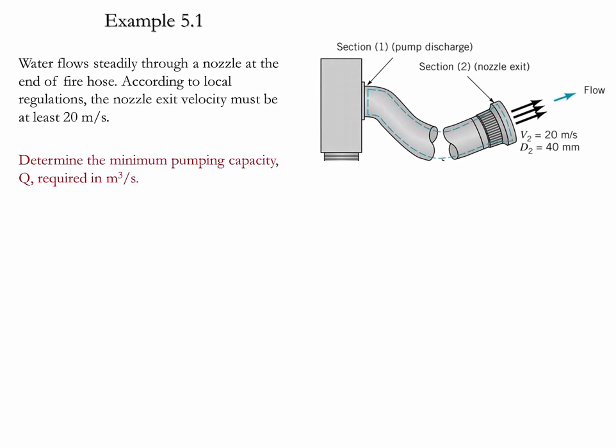Example 5.1. In this example, we have water flowing steadily through a nozzle at the end of a fire hose. According to local regulations, the nozzle exit velocity must be at least 20 meters per second.